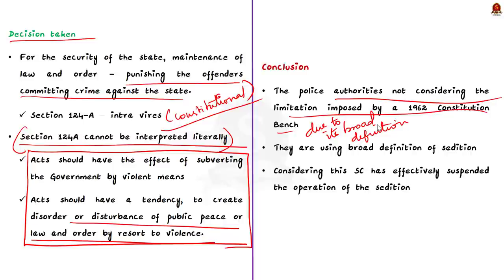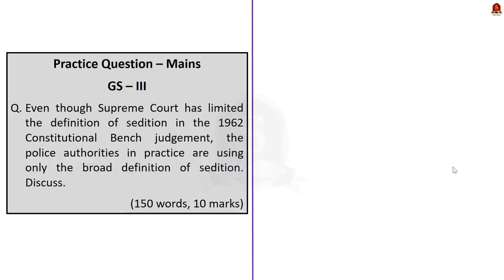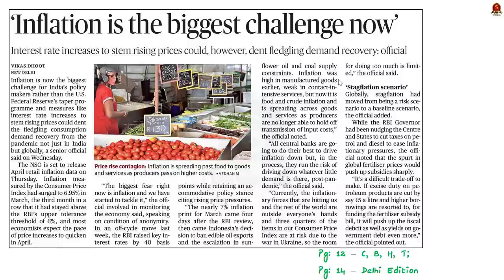That is why the Supreme Court has effectively suspended the operation of the sedition provision in the country. That's all you need to know about this news article — a very, very important one. In this discussion, we saw in brief about Section 124A, which is the sedition provision. Now let us move on to the next news article discussion.